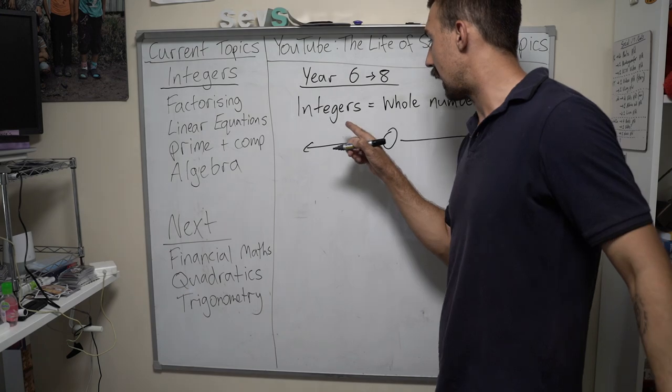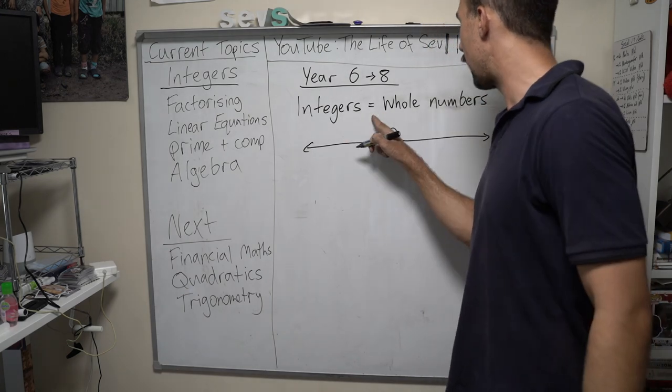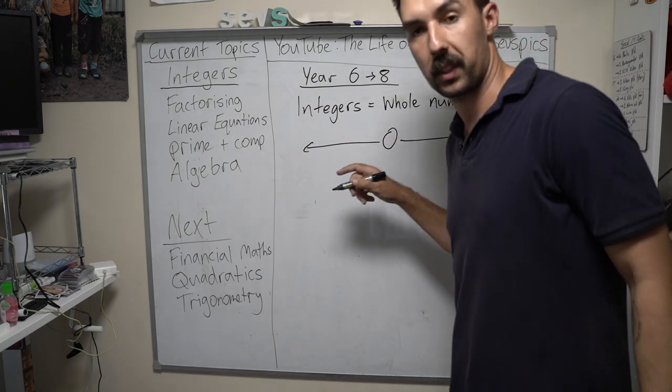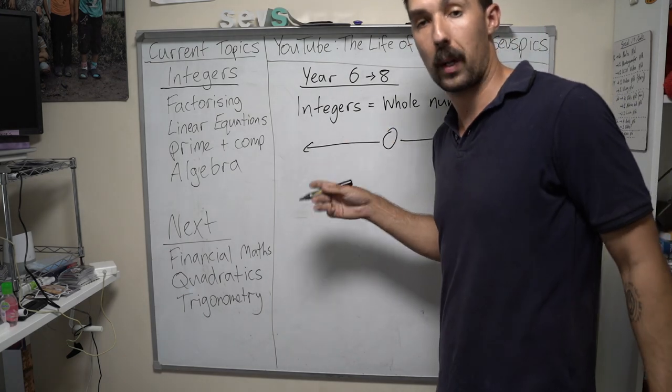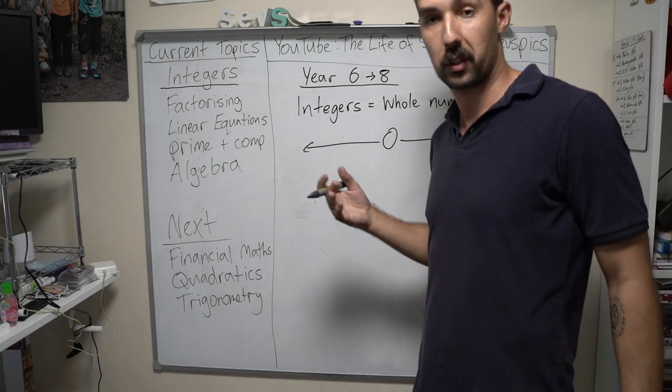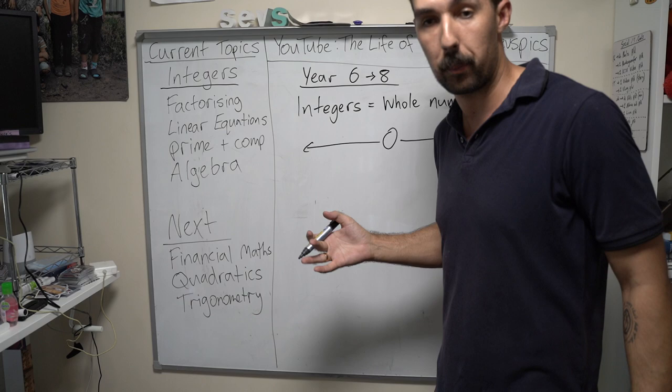So, we're going to start with integers. Integers mean whole numbers. Again, whole numbers — not fractions, not decimals — whole numbers.